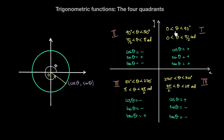To summarize: in the first quadrant (0° to 90°, or 0 to pi/2 radians), all three trig functions are positive. In the second quadrant (90° to 180°, or pi/2 to pi radians), only sine is positive; cosine and tan are negative. In the third quadrant (180° to 270°, or pi to 3pi/2 radians), only tan is positive; cosine and sine are negative. In the fourth quadrant (270° to 360°, or 3pi/2 to 2pi radians), only cosine is positive; sine and tan are negative.